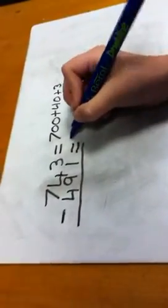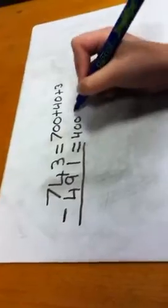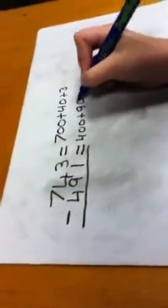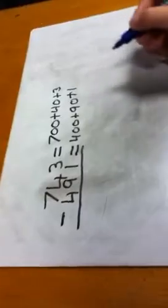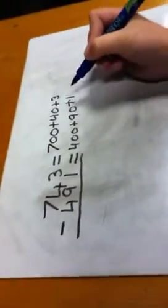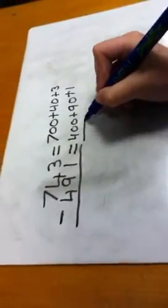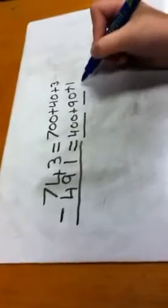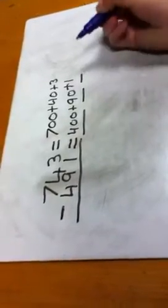Then you do the 491: 400 plus 90 plus 1. Then you put a line under the 400, 90, and 1.